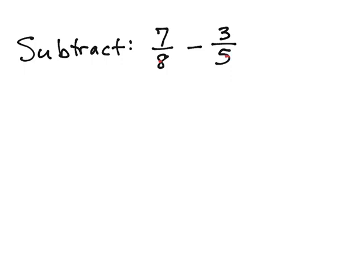If you struggle and you can't think about it, then just multiply those together. Because 8 times 5 is 40, so I know both of these numbers will go into 40.